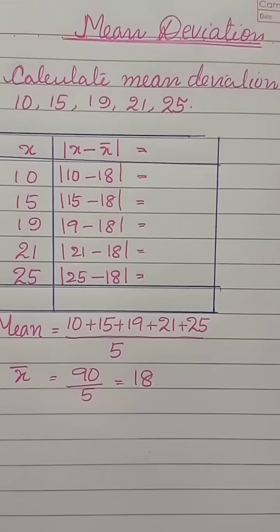Finding the deviations from the mean, that means 10 minus 18. 10 minus 18 is equal to minus 8, but we are not taking the negative sign, therefore the answer is 8.